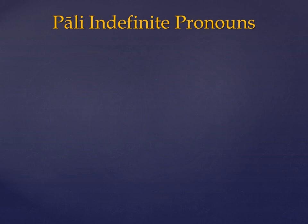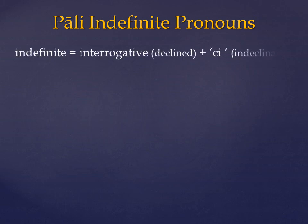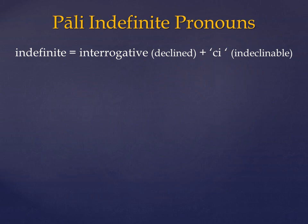Now in Pali, the indefinite pronoun is made from a combination of interrogative pronoun plus the particle CI. And according to Alan Bomhard's Grammar of the Pali Language, there are one of three particles that can be used: CI, PI or CHANA. But by far the most common is the particle CI, and as they are all synonymous, we will use CI in the rest of our tutorial.